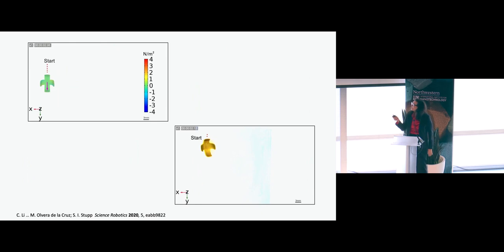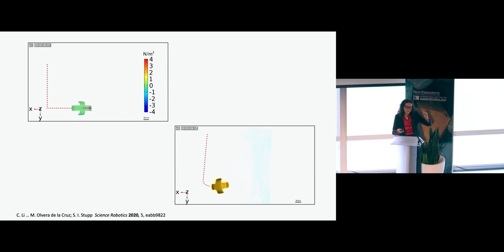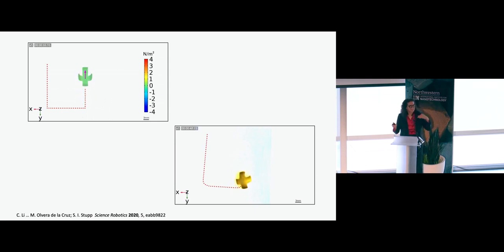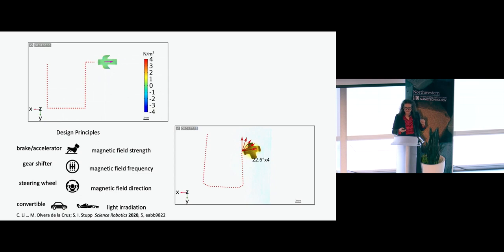To show how much we can control and understand these processes from theory going back to the lab: on the left is a theoretical design of a path for a robot made with the components and characteristics we set up in the lab. We designed the required magnetic fields and torques that the robot must have to follow a certain path. Then we programmed Sam's magnet with exactly the same program from the theory, and you can see in the experiment that the robot follows exactly that path. So you can really control where these objects move and how—you can brake, accelerate, gear shift, steer, and change the shape of the object by controlling the light.